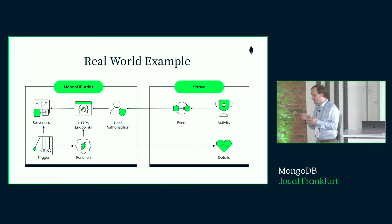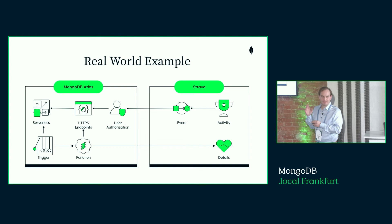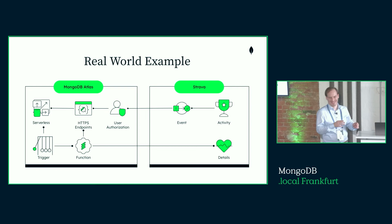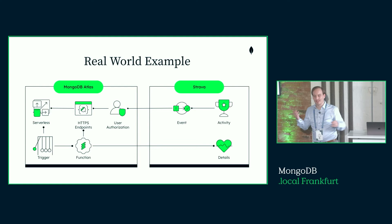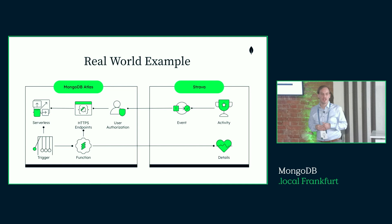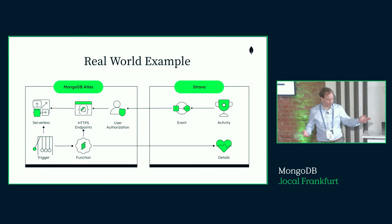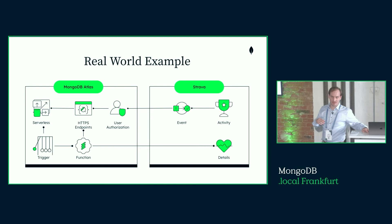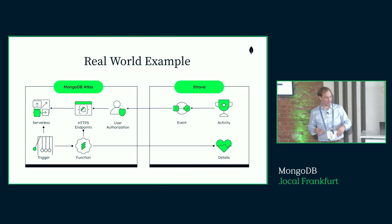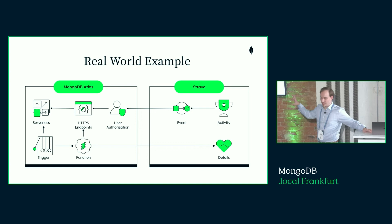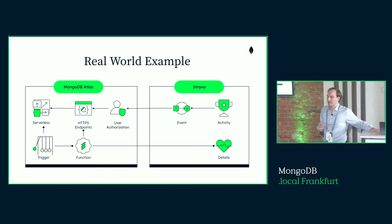Before the real-world example, a quick check — who knew everything I told you today? Who learned something new? Great. Now let's look at a real-world example. This application was written by a colleague of mine who is a triathlete. He uses Strava but isn't happy with how Strava represents and visualizes data. So he built his own application hosted on MongoDB Atlas with an integration to the Strava system.